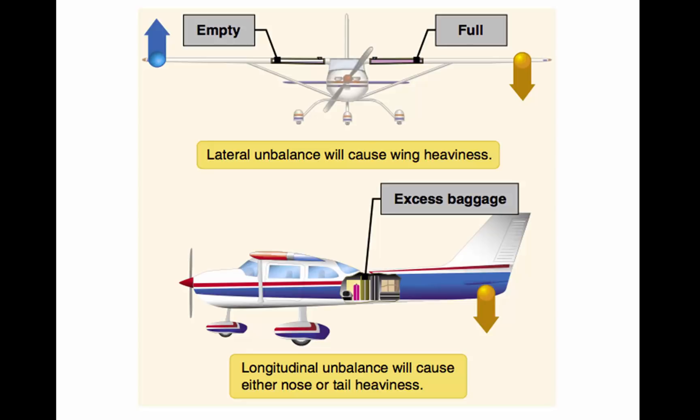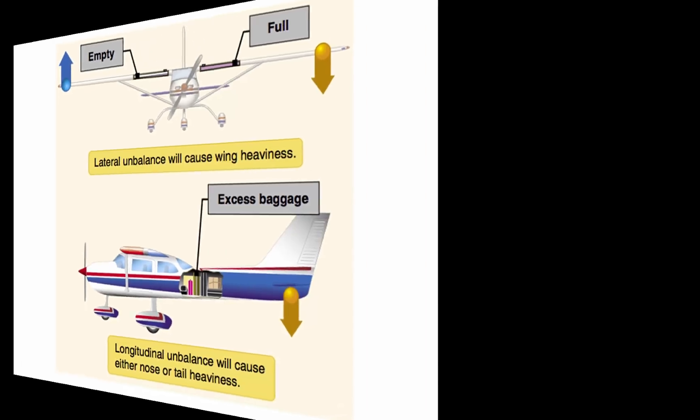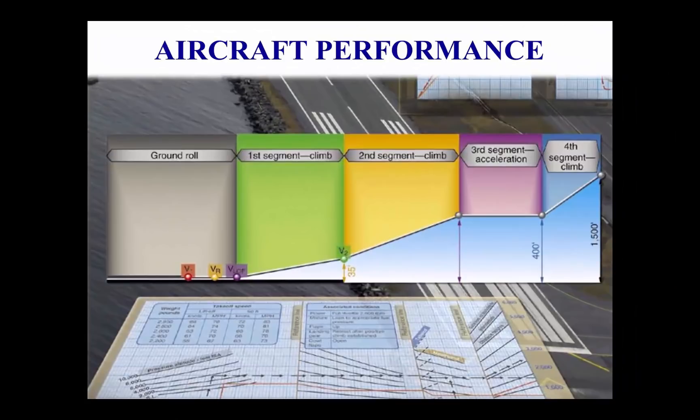Before any flight, the pilot should determine the weight and balance condition of the aircraft. Simple and orderly procedures based on sound principles have been devised by the manufacturer for determination of loading conditions. The pilot uses these procedures and exercises good judgment when determining weight and balance. The performance or operational information section of the aircraft flight manual contains the operating data for the aircraft.